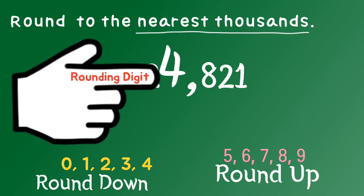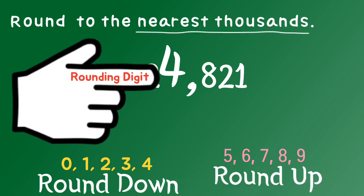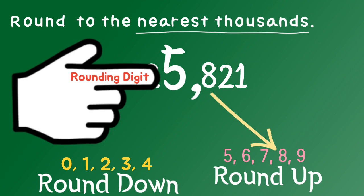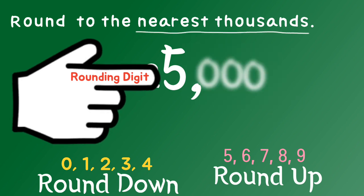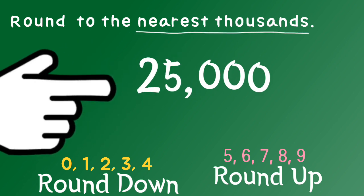Now, back to the original rounding digit — round down or round up? It is here, so round up. 4 will become 5. Lastly, change all the digits after the rounding digit into 0. So here's 24,821 rounded to the nearest thousands: 25,000.